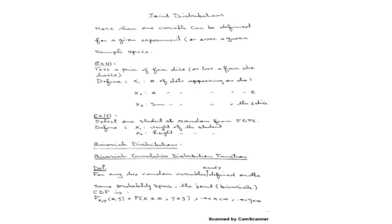For example, we can take x1 to be the number of dots appearing on die 1, and define another random variable x2, which is the number of dots appearing on die 2. We can also define x3, which is the sum of the dots appearing on the two dice. And we can define x4, which is the product of the dots appearing on die 1 and die 2. So we can define more than one random variable over a given sample space and we want to study all of them.